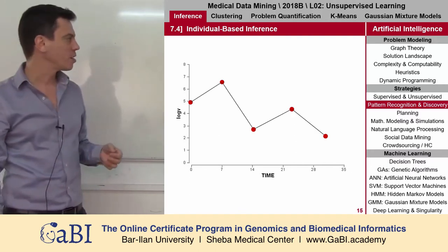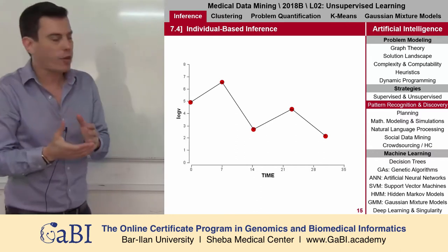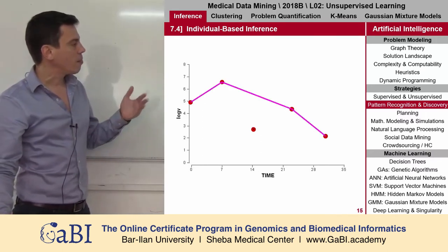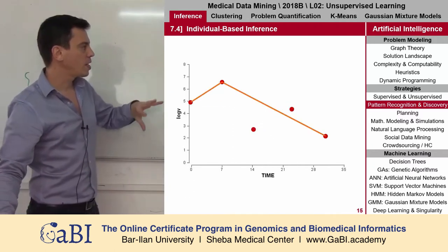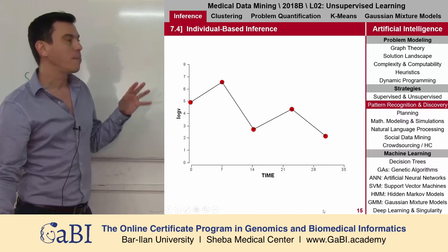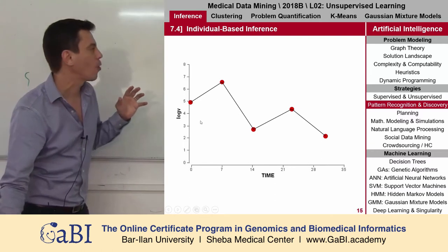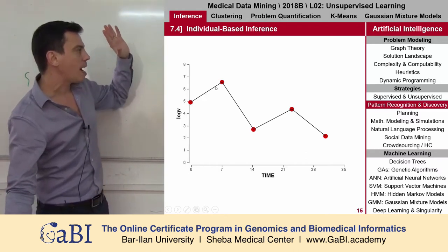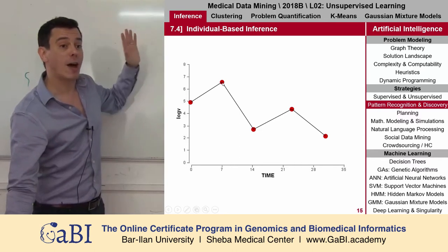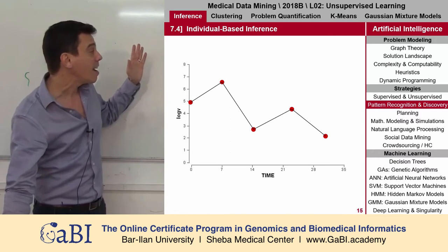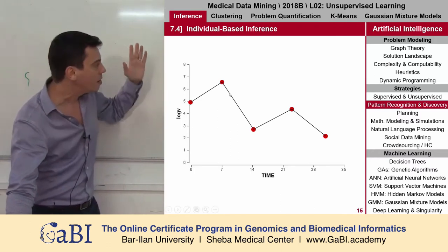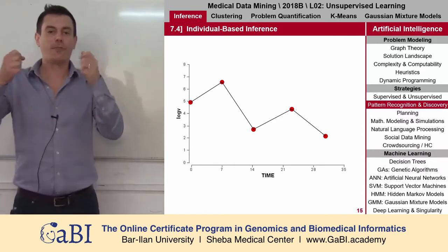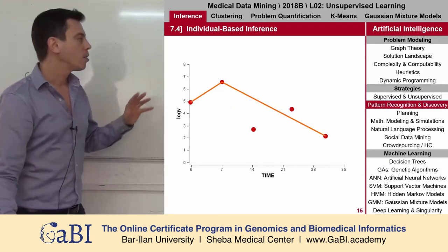This is usually what we see in biological systems. One thing many people do is just connect the dots. But we are interested in different kinds of interpretations — not necessarily that the natural behavior was exactly that the patient came, gave blood, went home, the viral load went up until a miracle happened when he came to the clinic again and his viral load decreased. Of course this is not reality — it's just the problem of sampling, the problem of noise. There could be different interpretations to the same data.